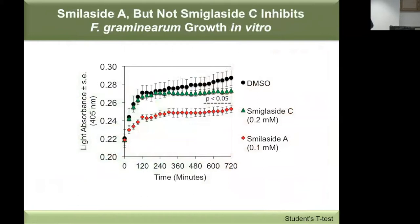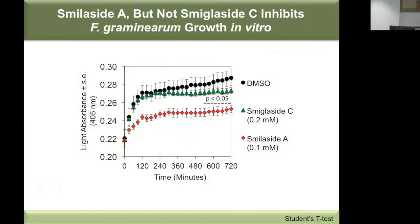If these compounds are related to resistance against Fusarium, we want to show in vitro bioactivity. In an in vitro liquid culture assay, the triacetylated smilacide C does not show any significant activity against Fusarium, whereas the diacetylated smilacide A shows significant growth inhibition. Notably, the concentration of smilacide A used is actually lower than smilacide C, reflecting their in vivo concentrations — so even at lower concentration, diacetylated smilacide A is more bioactive than triacetylated smilacide C.